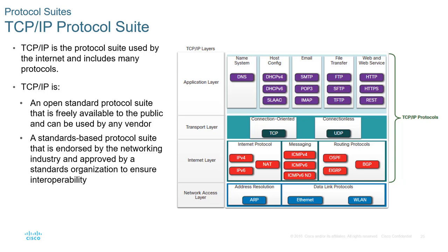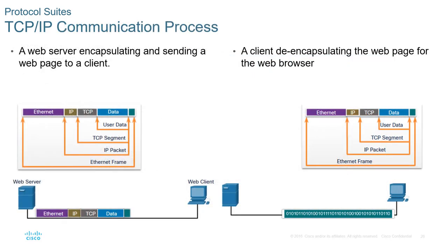Within our communication, each layer engulfs the layer above it — that's called encapsulation. Data at the HTTP level is engulfed by TCP, which is completely surrounded by IP, which is then completely surrounded by Ethernet. That Ethernet group is broken into bits and sent to the destination, where the receiver de-encapsulates it — unpeeling from Ethernet to IP to TCP back to data. That's how the encapsulation process works.